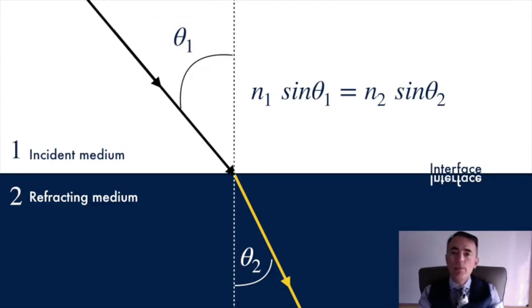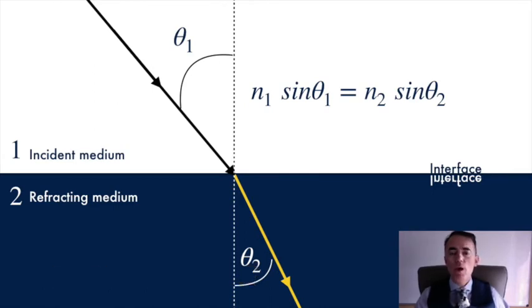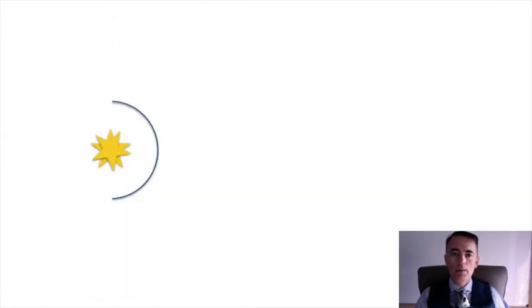Well, this is the ray description of reflection and refraction, but we can also explain it in terms of waves through Huygens' principle. Christiaan Huygens thought that light could be described as a series of pulses emitted from all the points of the light source.